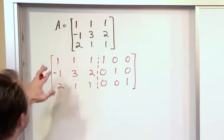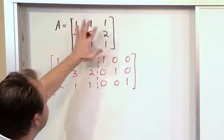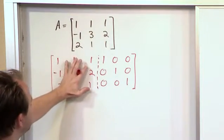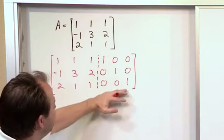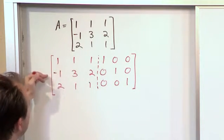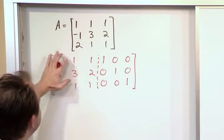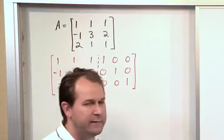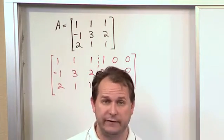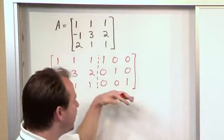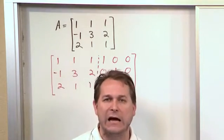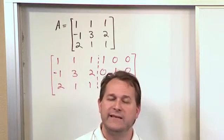Effectively, what you're trying to do is you're trying to find the inverse such that when you multiply the inverse matrix times this one, you're getting this on the right. So what we do is we set up our matrix with the augmented matrix with what we're given on the left and what we're trying to get to on the right.